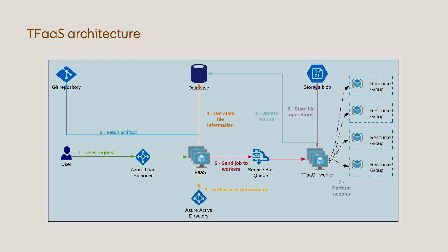Briefly, the TFAS architecture is pretty straightforward. At its core, we have an ALB router that routes requests to the TFAS API server. The API server retrieves relevant metadata — where the state file is stored, what the Git repository is — performs authorization and policy checks, then creates a job and enqueues it into a service bus. On the other side of the queue, TFAS workers listen for jobs, pick them up, run them, and update the state file and database as needed. This allows us to scale horizontally and vertically by simply adding more API and worker servers.